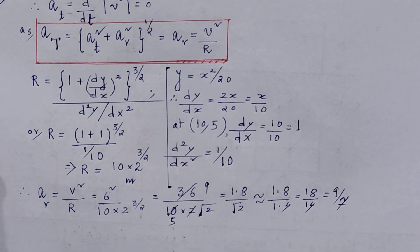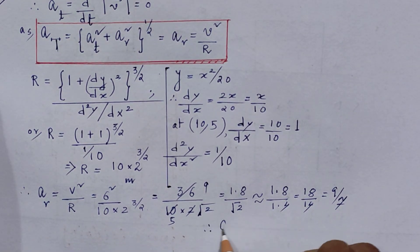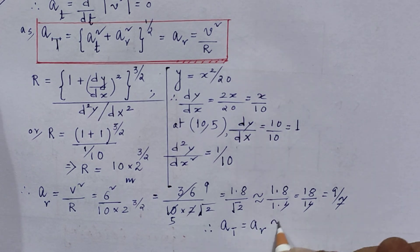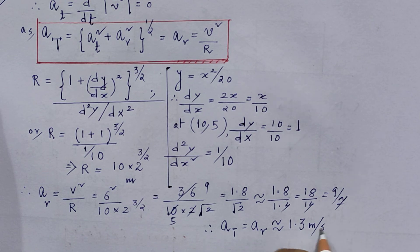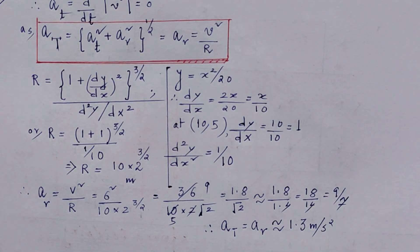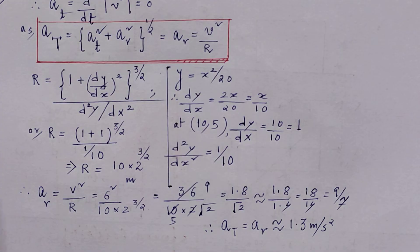And I can say that this is nearly equals to the total acceleration, that is equals to this radial acceleration, and it is nearly equals to 1.3 meter per second squared. So what is your answer? Your answer is 1.3 meter per second squared.